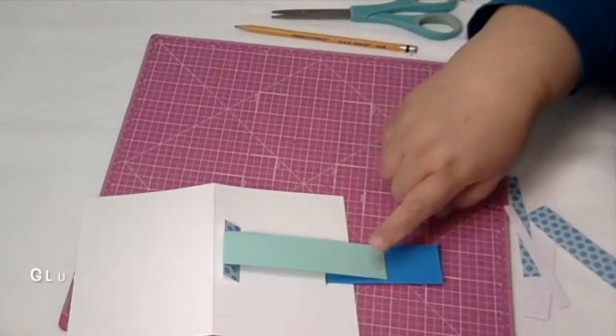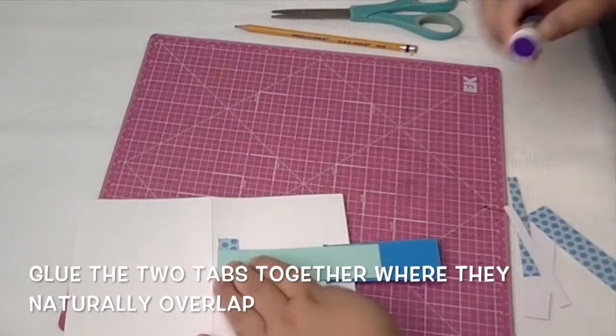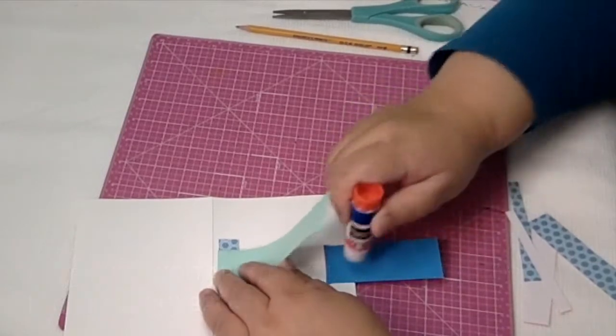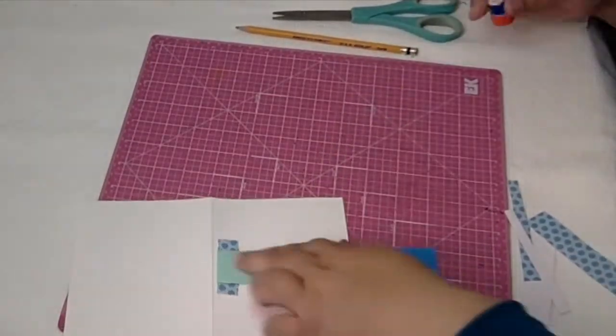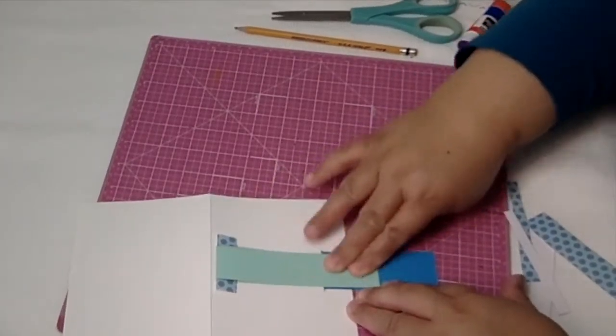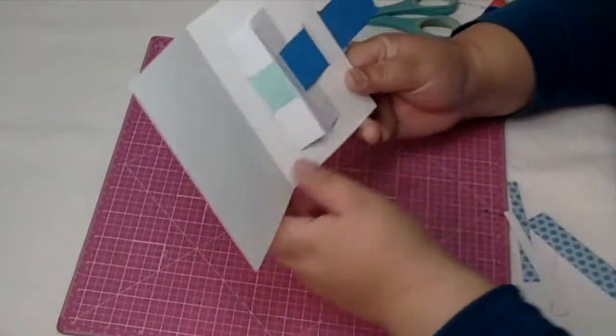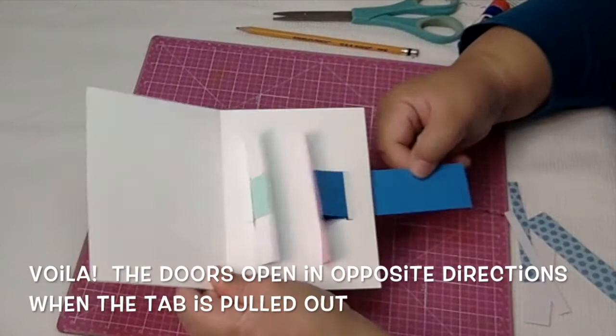So push the doors back closed, flip the card over, see where the two tabs land on each other naturally, just put glue there so that they'll stick together. Great! And when you flip it over, you have one pull tab.